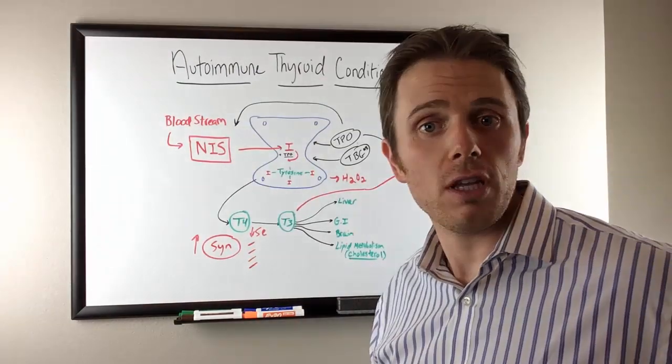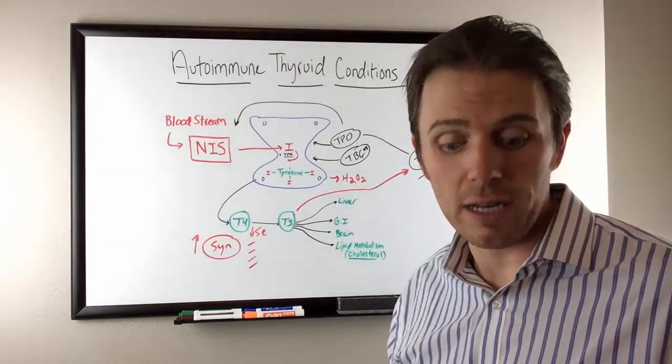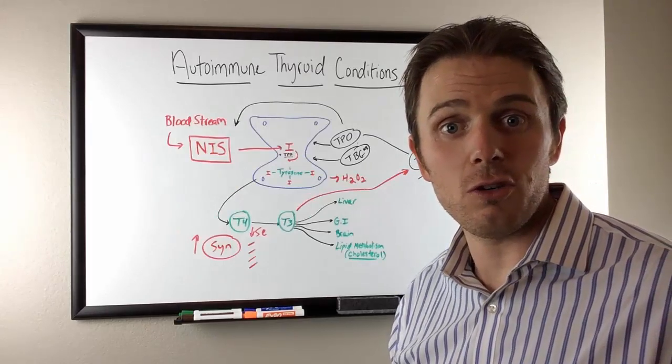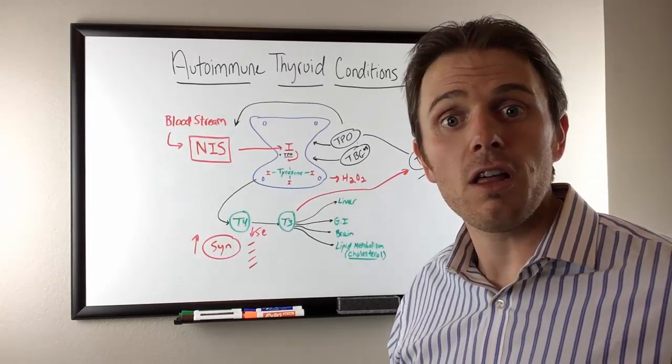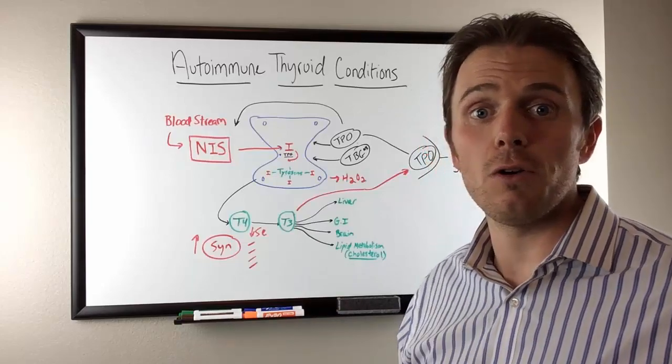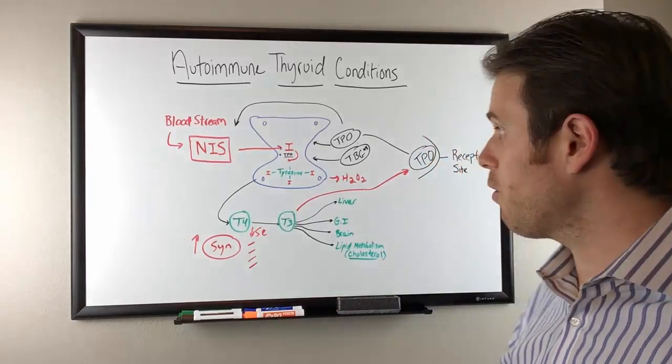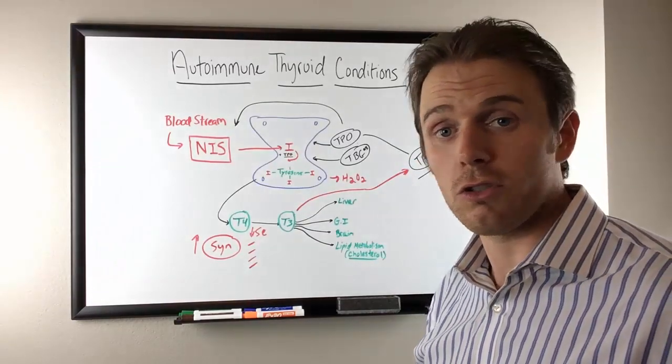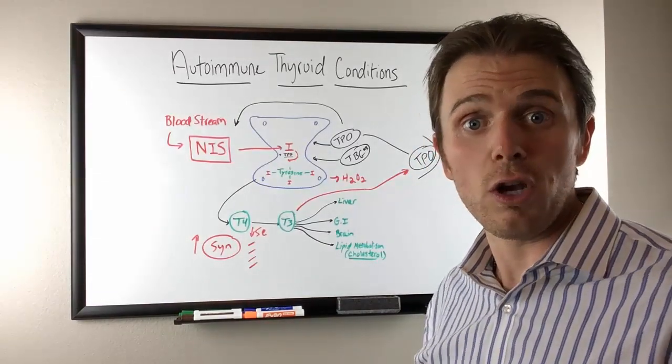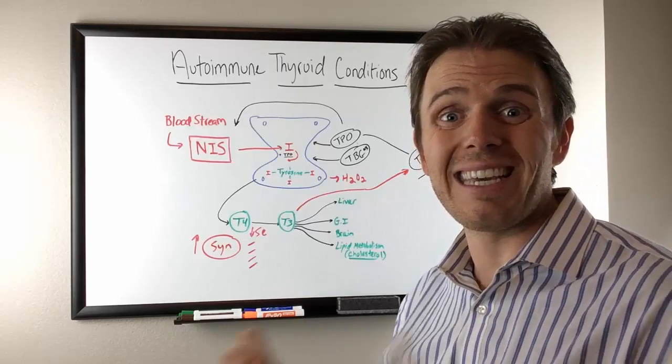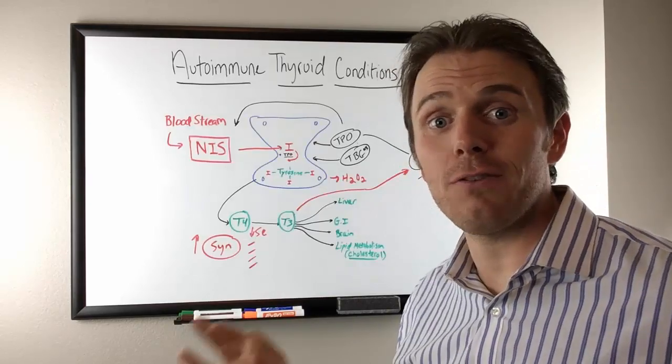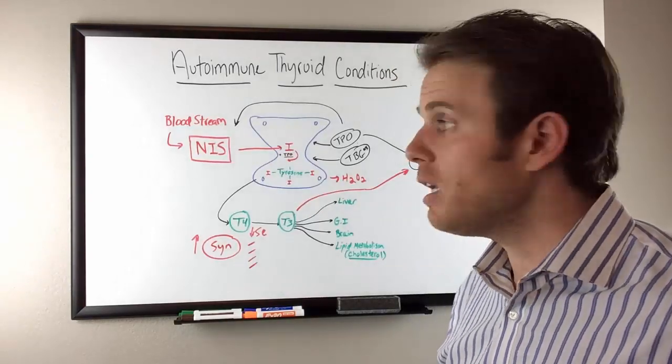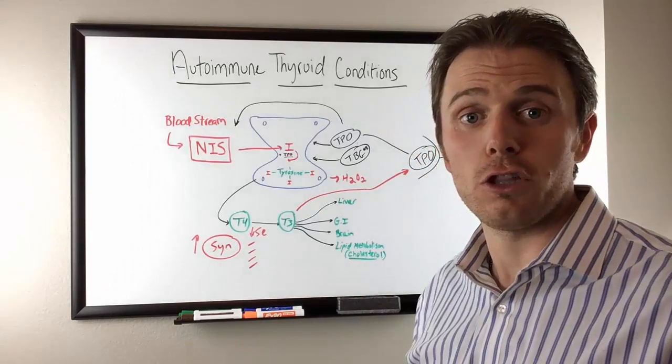First thing first, you have to get diagnosed before we can do anything. One of the first things you can do is get a good TPO antibody or thyroid binding globulin antibody test. That way you know you got it. And then from there, there are certain infections that can make this go worse. And there are also certain nutrients like iodine early on. Iodine can be like gasoline on the fire, especially if you're selenium deficient. And then also other things such as gluten.